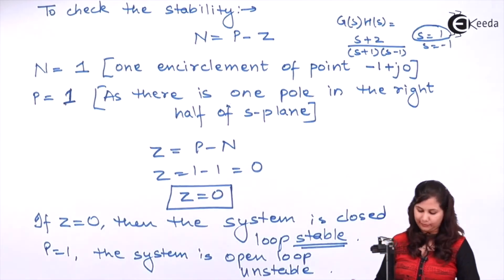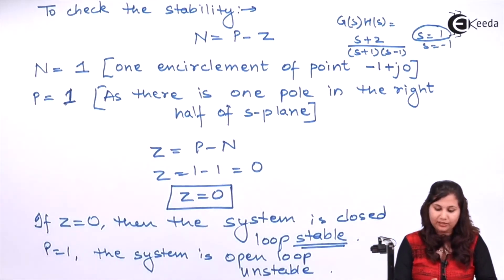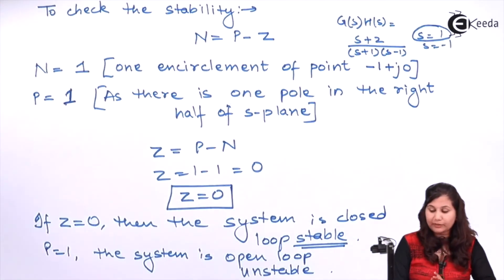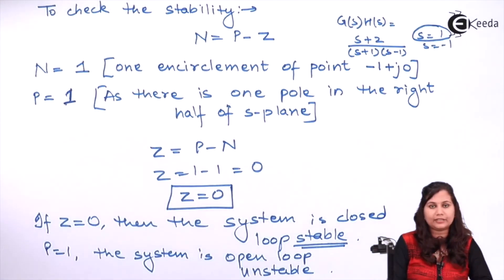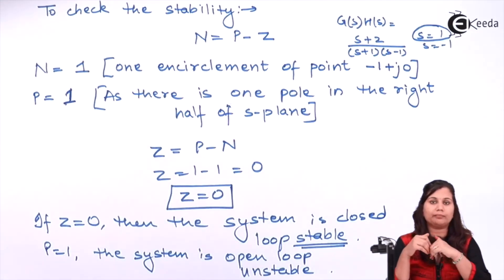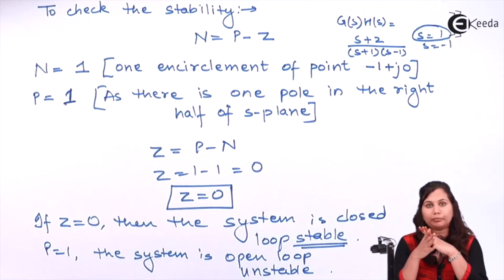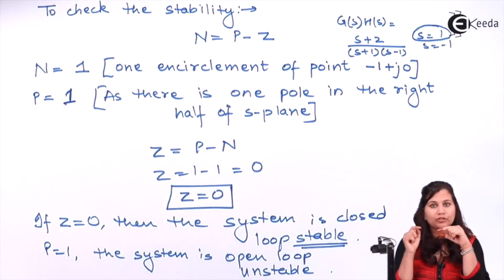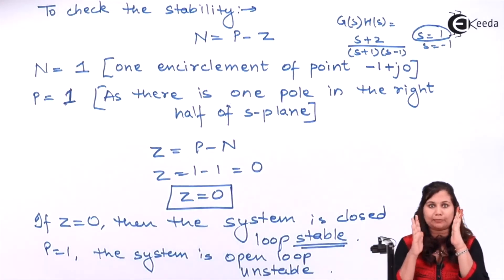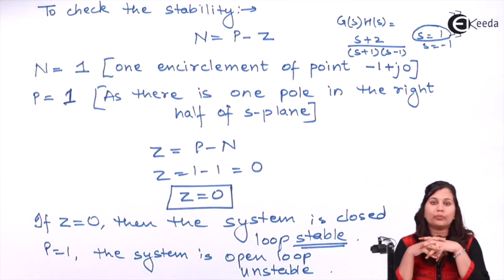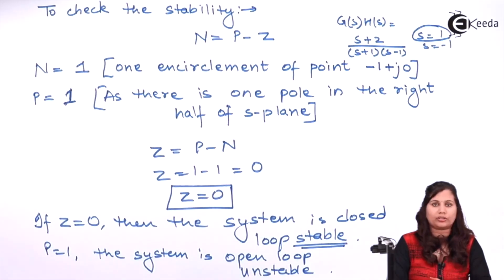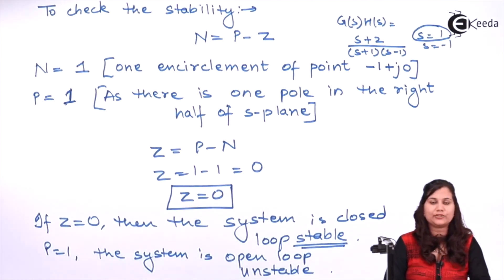In summary, to draw the Nyquist plot: substitute s = jω, find magnitude and phase angle equations, form a table for ω from 0 to ∞, plot the polar plot, then mirror it to get the Nyquist plot. For stability, use N = P - Z to check whether the system is open loop stable, closed loop stable, or unstable. I hope this problem is clear to you — thank you.